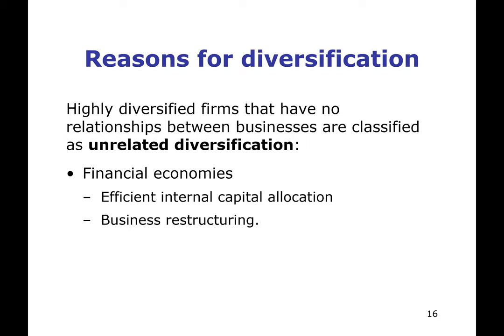Unrelated diversification is when firms expand into areas where there is no clear business relationship between the different parts. This is done through efficient internal market allocation — financial economies gained through efficient internal market allocation and business restructuring. A firm may take free cash flow and invest it in another business, enter a new area when blocked from further growth, or purchase an underperforming business, improve it, and then sell it off or operate it to expand profitability. It's about managing money across the different components of the business rather than necessarily managing the businesses themselves.